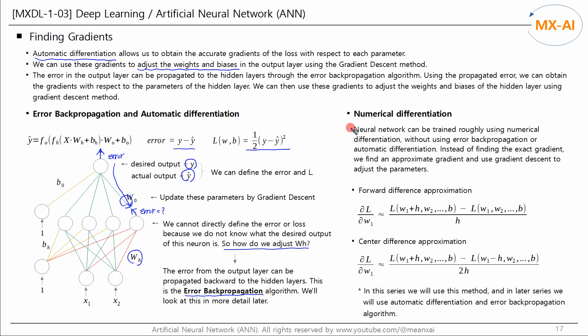One way to find approximate gradients is through numerical differentiation. A neural network can be trained roughly using numerical differentiation without using error backpropagation or automatic differentiation.